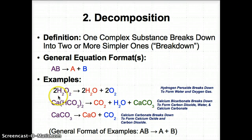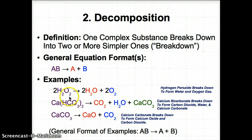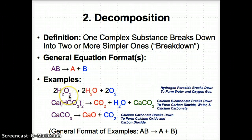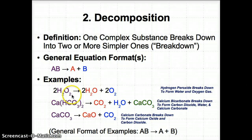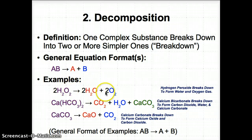An example: 2H2O2 (hydrogen peroxide) breaks down to form 2H2O and O2. A more complex substance, H2O2, breaks down to form the simpler H2O and O2. This follows the general format AB → A + B, where H2O2 is AB, H2O is A, and O2 is B. In summary, hydrogen peroxide breaks down to form water and oxygen gas — something more complex breaking down into two simpler ones.